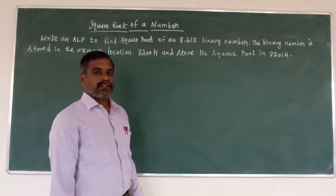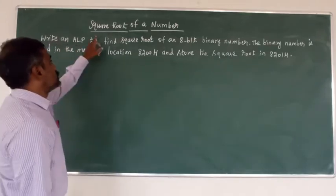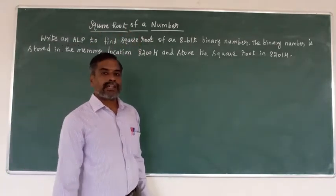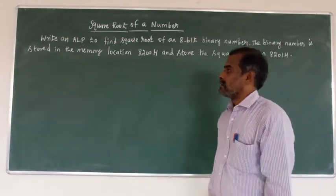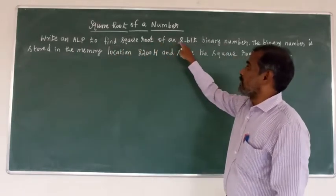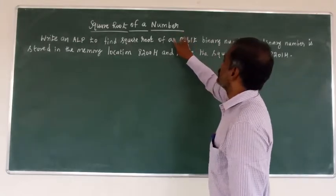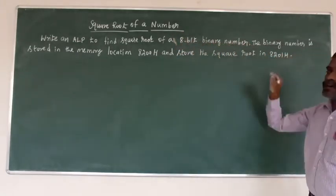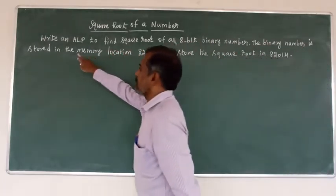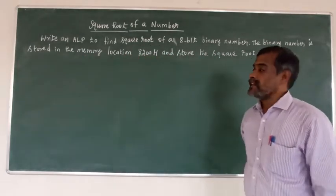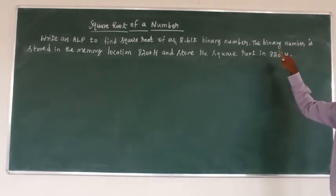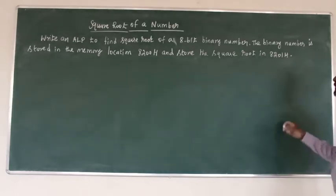Good morning. Today we will discuss the square root of a given number. Write an assembly language program to find the square root of an 8-bit binary number. The binary number is stored in memory location 8200H, and store the square root in memory address location 8201H.